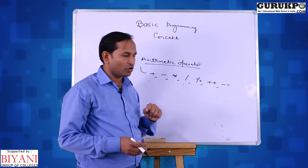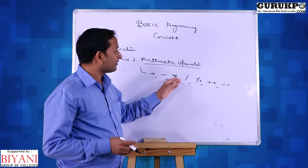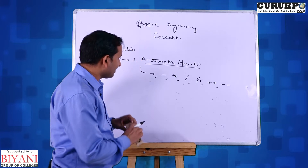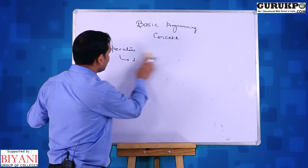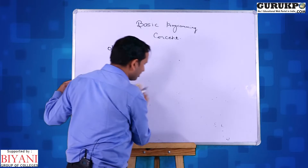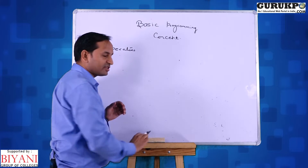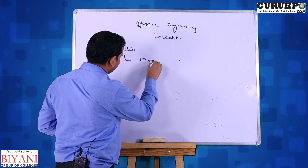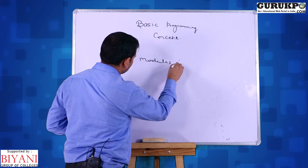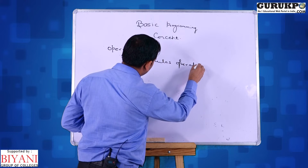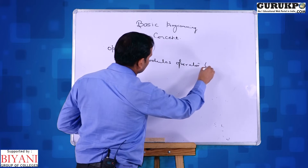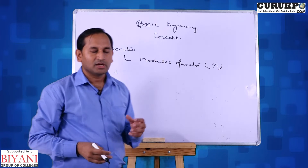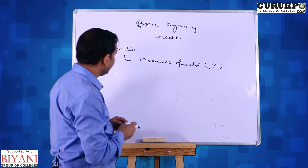The first four — plus, minus, multiply, divide — work on the basis of mathematics. But the fifth one is the modulus operator. The symbol of modulus is the percentage sign. The first property of modulus operator is that it always gives the remainder. For example, 4 mod 3 gives 1.